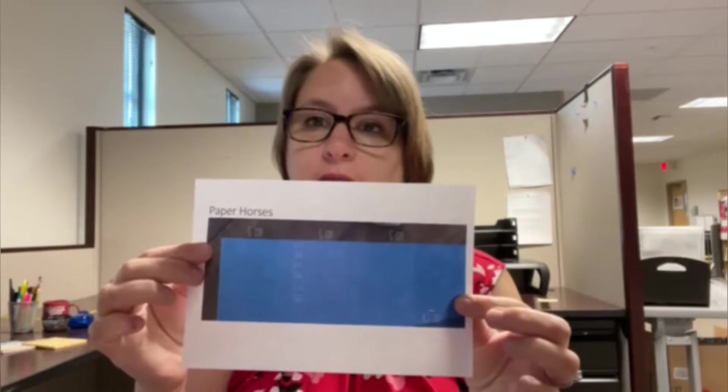The supplies you're going to need today are a pencil, a ruler, and then in your kit is a paper horses diagram that shows how long each section is that you're going to be measuring. You will also have paper to make horses and I included extra paper so if someone else in your family wants to make one too you can race your horses. You also need a pair of scissors for this.